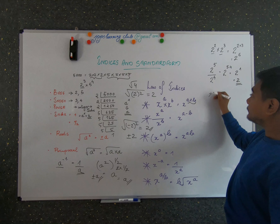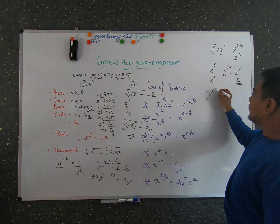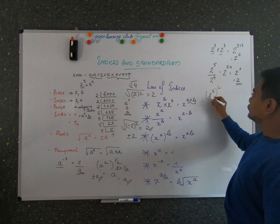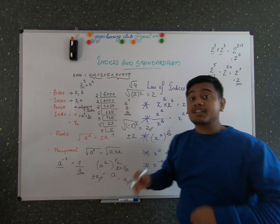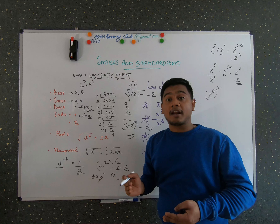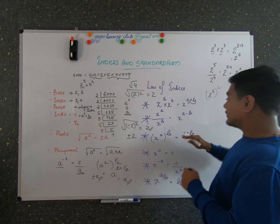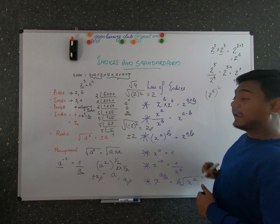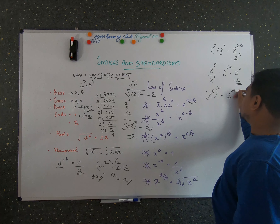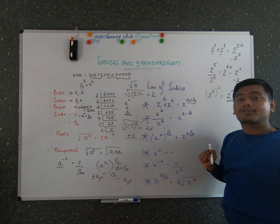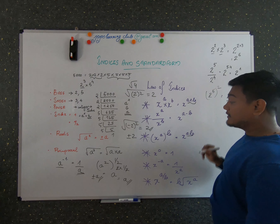The third law: when a number is raised to a power and then further raised to another power, the index values are multiplied. For example, 2 to the power of 5, raised to the power of 2, equals 2 raised to 10, because the indices a and b are multiplied to give a times b.